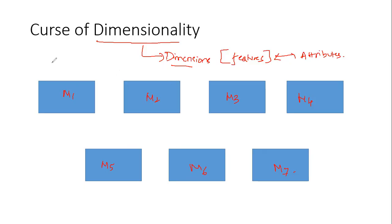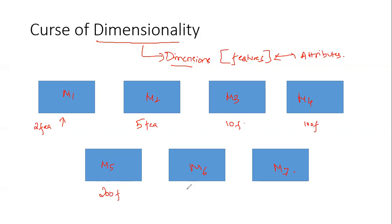Let's consider an example. I'm going to take a dataset and create independent models, changing only the number of features used. In model M1 I'll take some features, in M2 five features, in M3 ten features, in M4 one hundred features, in M5 two hundred features, and in M6 ten thousand features.